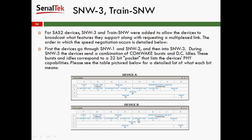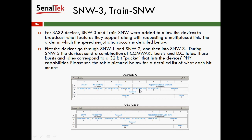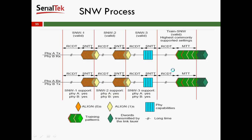Device B supports all speeds both with SSC and without SSC. During the SNW process, SNW-1 goes out, SNW-2 goes out, and then the PHY capability bits are exchanged. Once the PHY capability bits are exchanged, we go into Train-SNW, where the highest commonly supported settings of both devices are sent out. In the previous example, both devices support Gen-3 without SSC, so the highest supported capability is Gen-3 at 6 gig without SSC. The trains and Train-DUNs are then sent.